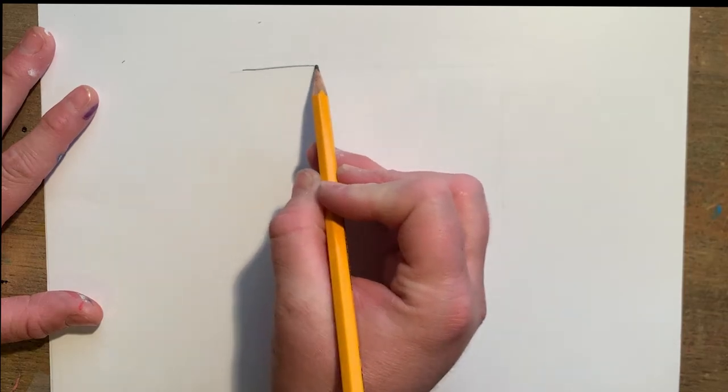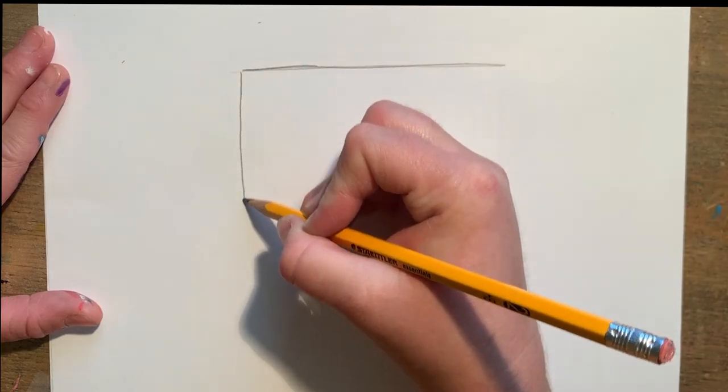We're going to draw a square shaped emerald. Starting off drawing a square shape, I'll try to make each of my edges an even length.